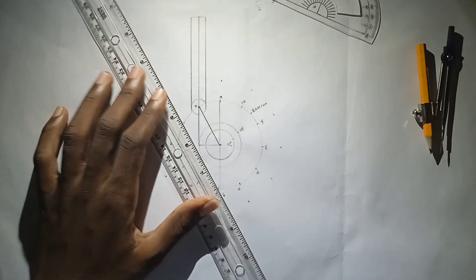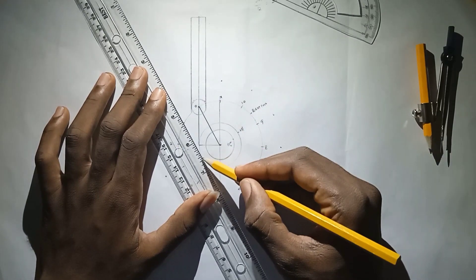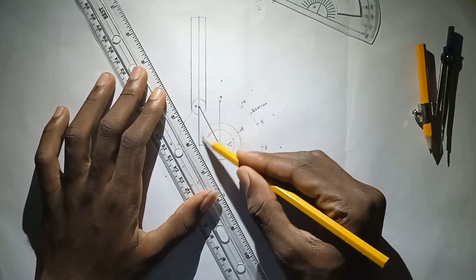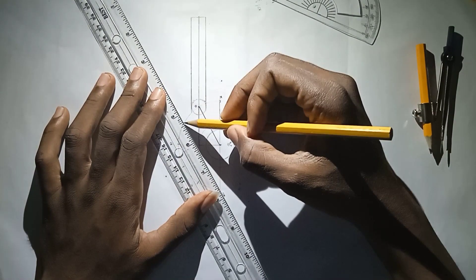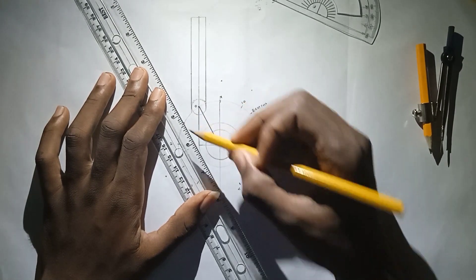Now tangent is a line that actually is the second place of a circle at one point. So from this point, I will draw a line that will pass through that will touch the circle at one point. So it'll be like this.